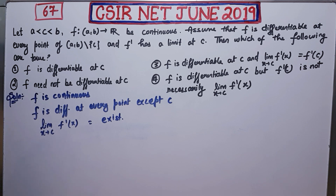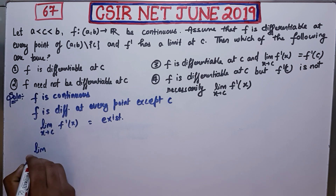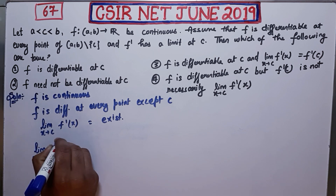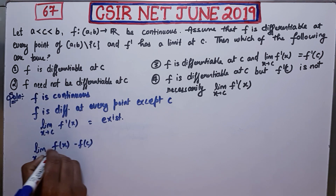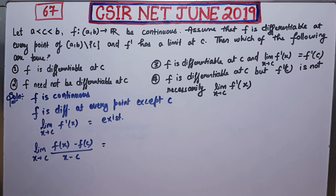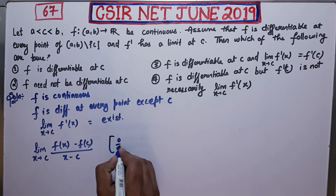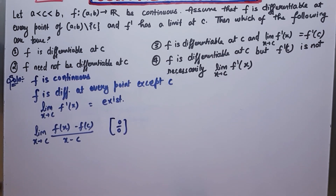You need to check whether your function is differentiable at C or not. You know the basic definition of differentiability from class 12th level: a function is differentiable at C if a certain limit exists. If I somehow prove that this limit will exist, then I am done with the differentiability part. If you plug in C, you will always get 0 over 0 form.